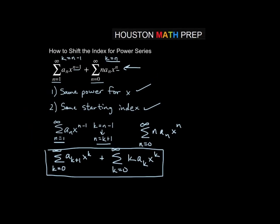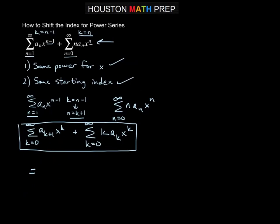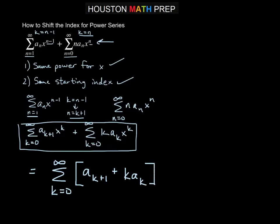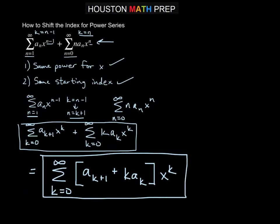Now we have our new version of the sum of two power series in terms of k. You'll notice k has the same starting index - both start at k equals 0 - and the same power x to the k. So now we can combine these: the sum from k equals 0 to infinity of (a sub k plus 1 plus k times a sub k) times x to the k, factoring out the x to the k. That's shifting the index - we only really had to shift the index of the first series that started at n equals 1.